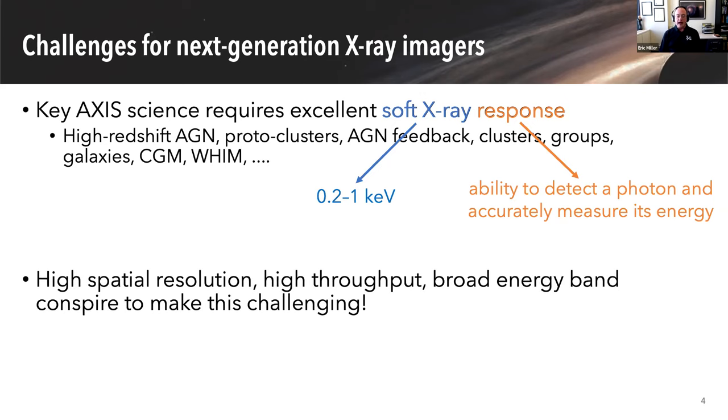The very characteristics that make AXIS such a breakthrough and appealing science mission really conspire to make this challenging for the camera. In particular, the high spatial resolution generally means we need to have small pixels so that we can sample that really good PSF. The high throughput drives this fast readout so we don't have photons arriving on top of each other. And this broad energy band, in order to detect the hard end up to 10 keV, we need to have thick detectors. But all three of these design parameters make the soft X-ray response challenging.